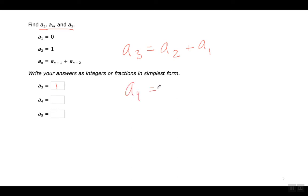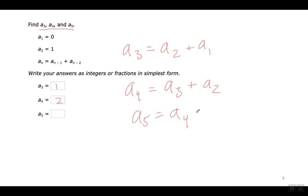A4 is going to equal A3 plus A2. A4 equals A3 plus A2 — one plus one, which is two. A5 is going to equal A4 plus A3. A4 plus A3 — two plus one is three. That's it, I'm done. They're not that difficult once you get the hang of it.